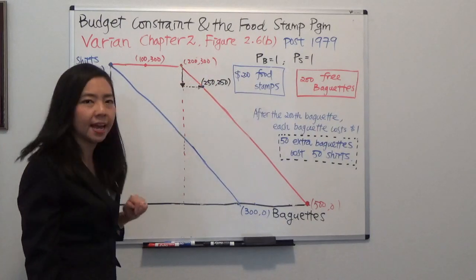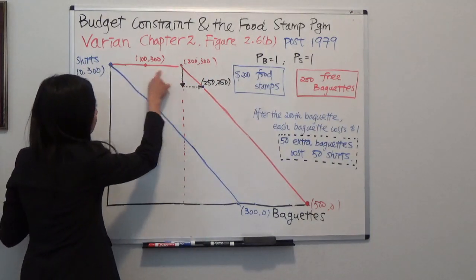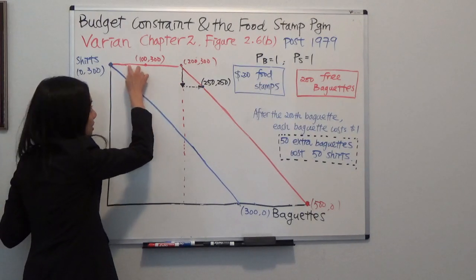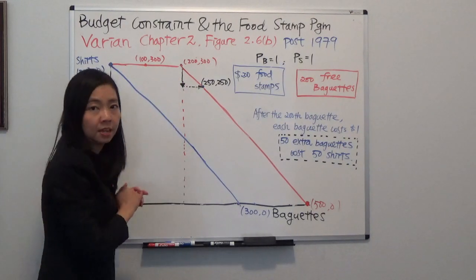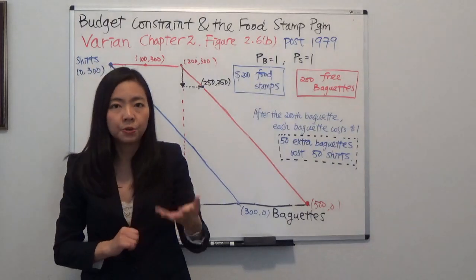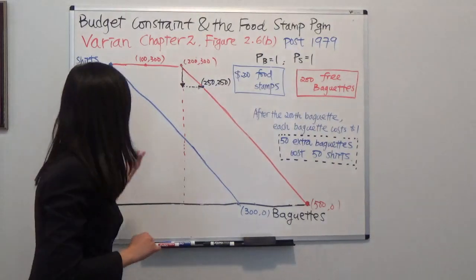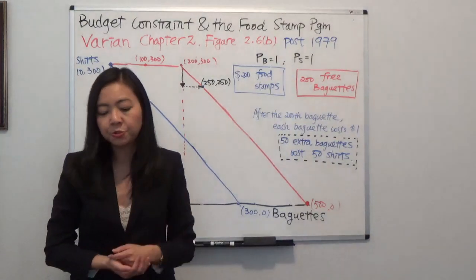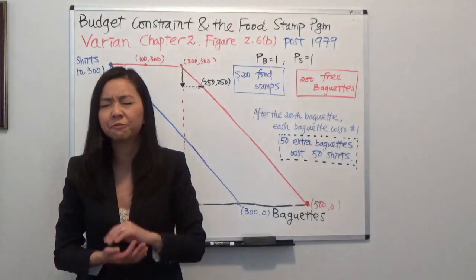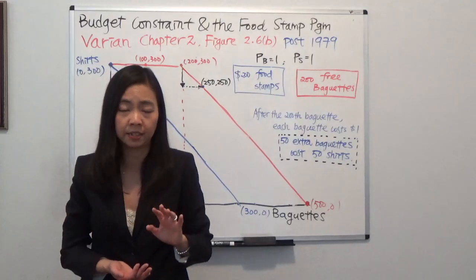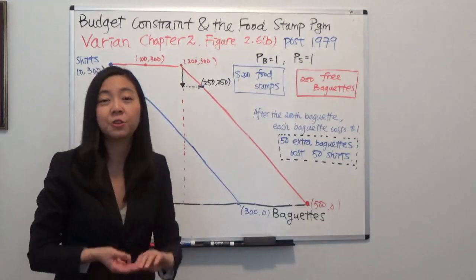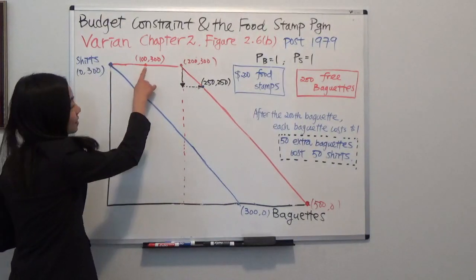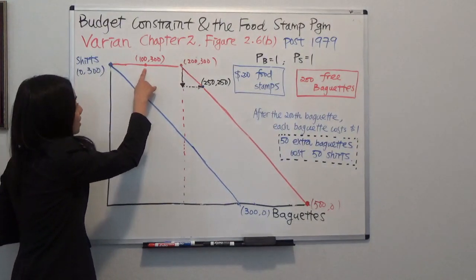So you'll be asking, what is this flat line in between? These are the free baguettes — you can consume these baguettes without paying for them. Suppose the government gives you 100 free baguettes, and after consuming them you tell yourself that's enough, you don't want any more baguettes. Then you can just go home and use the $300 to buy only t-shirts. That's the point: 100 baguettes and 300 t-shirts.